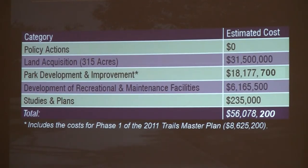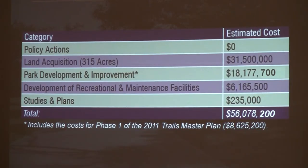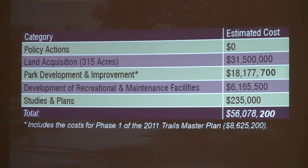In terms of cost and actions — policy actions don't have a dollar value allocated, as that's a city activity for staff and council requiring only staff time. Land acquisition for the 350 acres has a price tag of $31.5 million. For park development and improvement it's $18.1 million — note that includes the $8.6 million estimated for the trails plan, so it's not parks separate from trails but includes the trail component. Recreational maintenance facilities are $6.1 million. And then studies and plans — feasibility studies identified in the action plan — are less than half a million, around a quarter million.